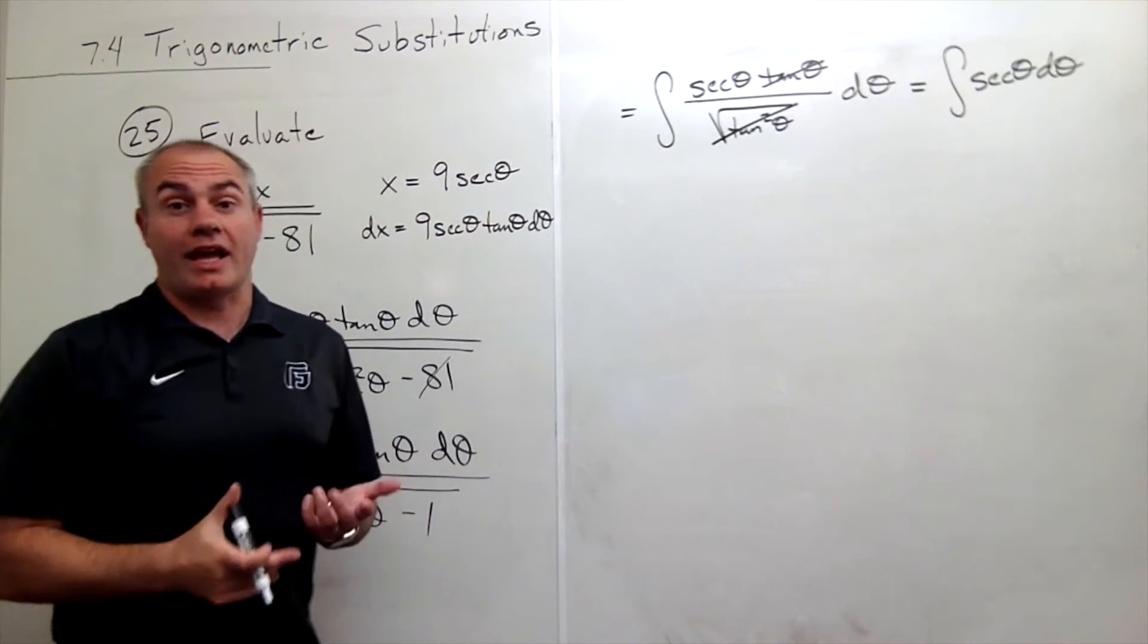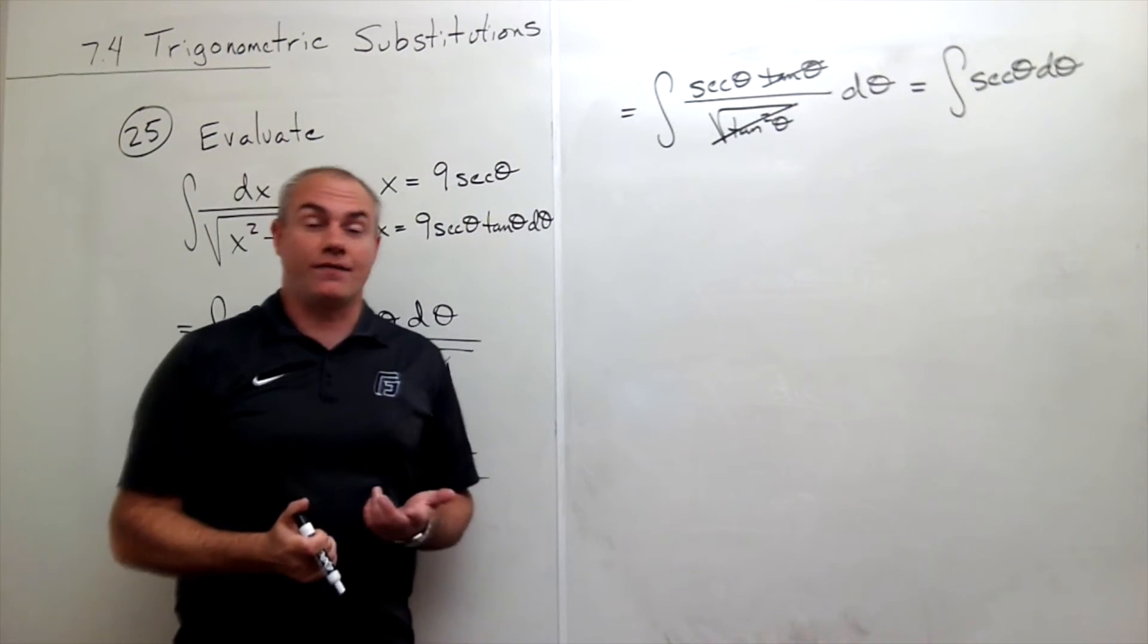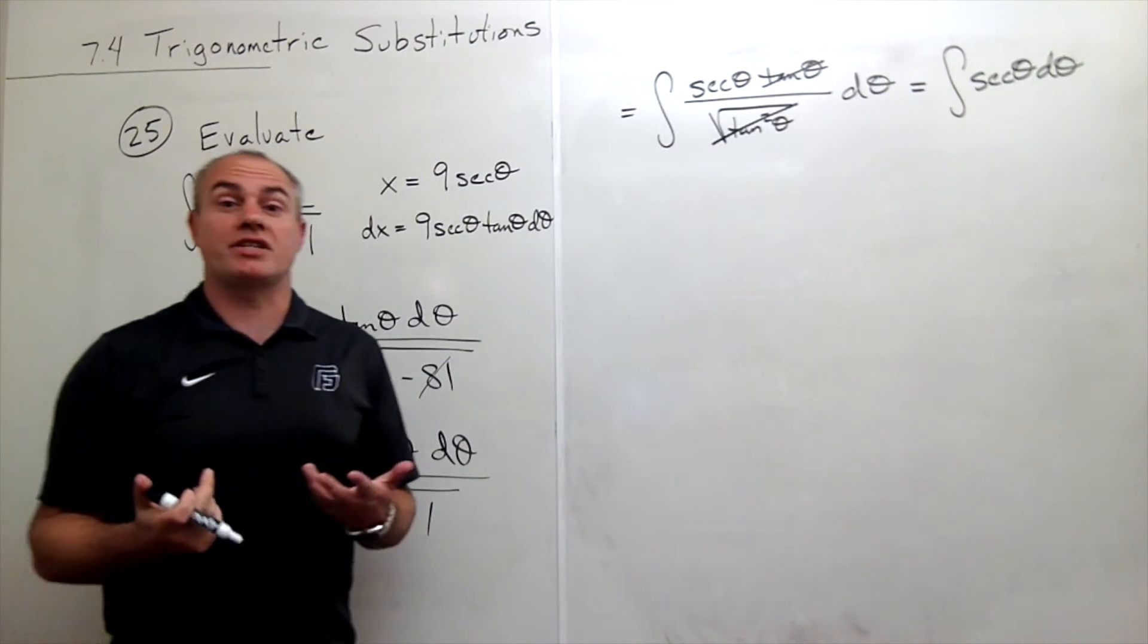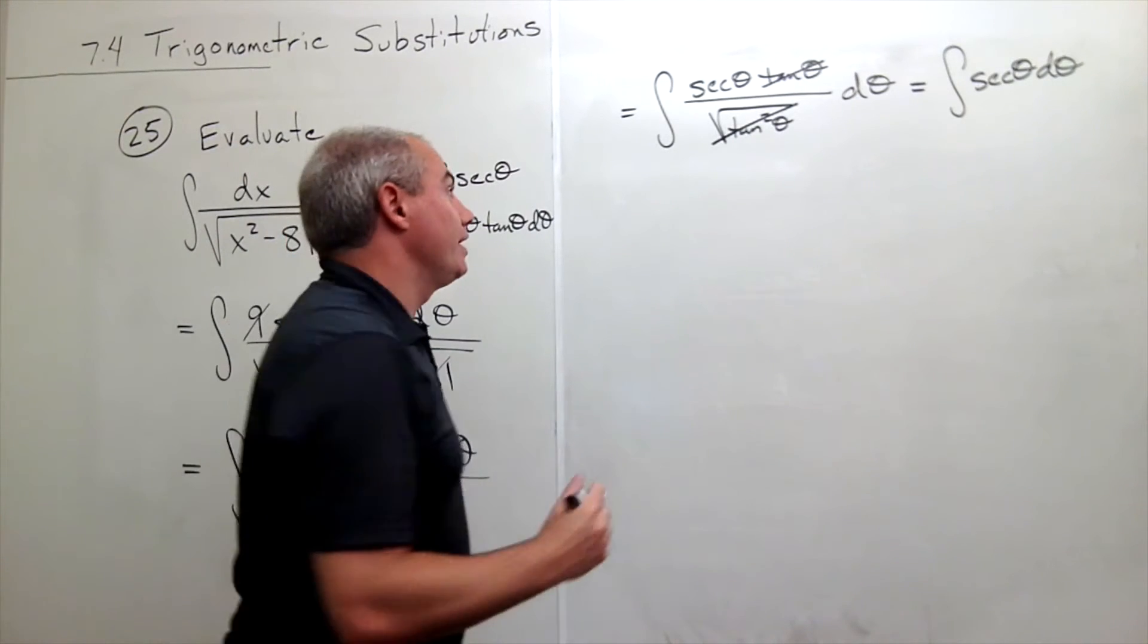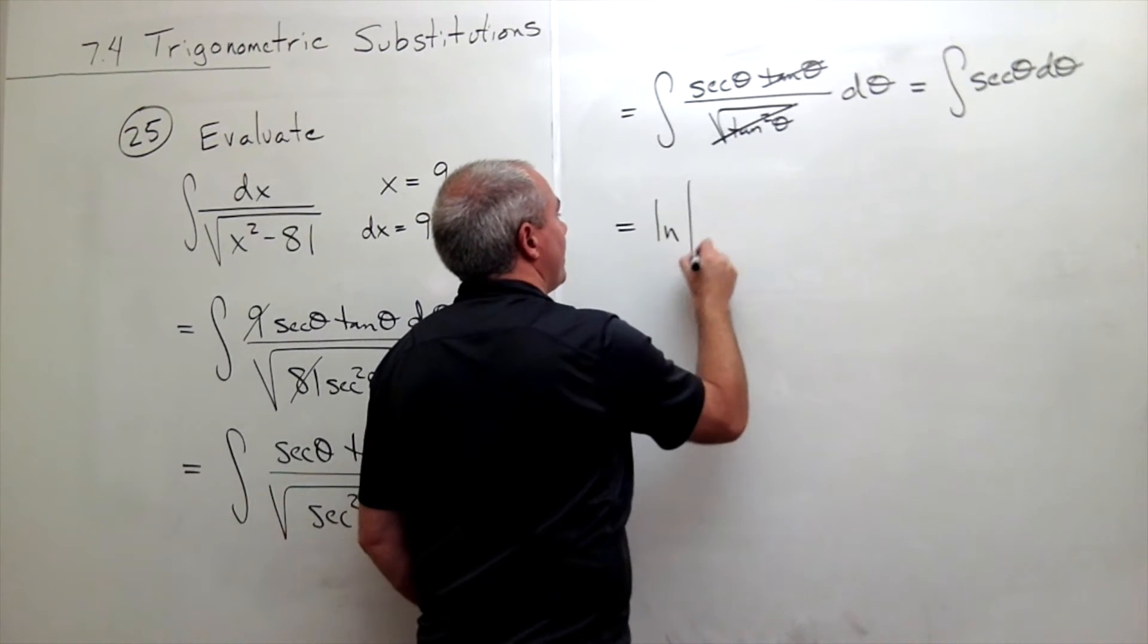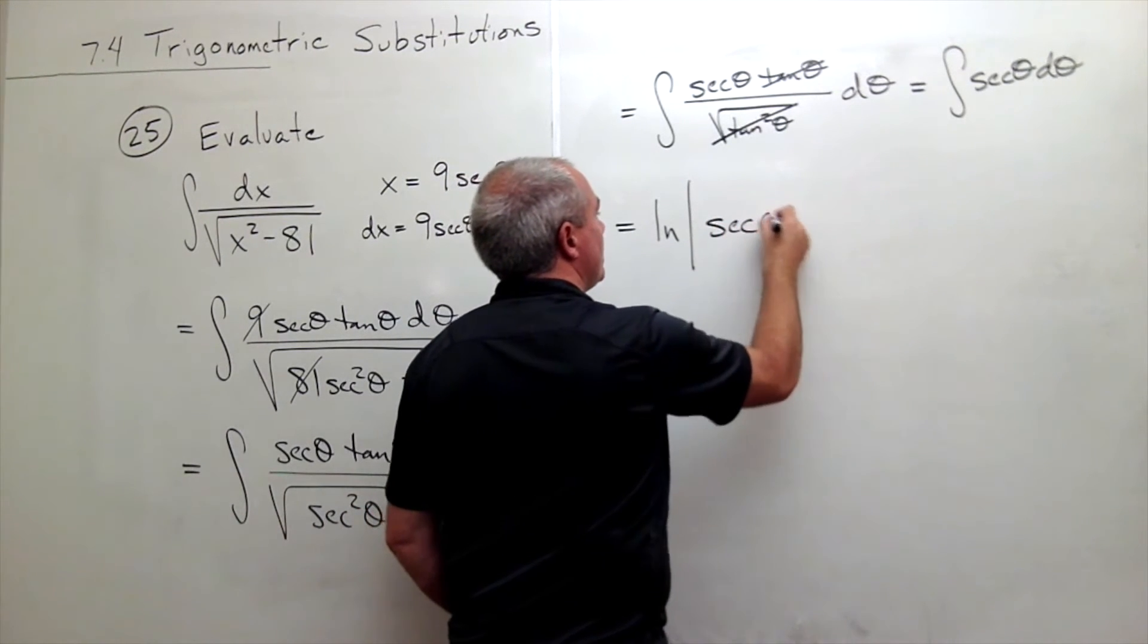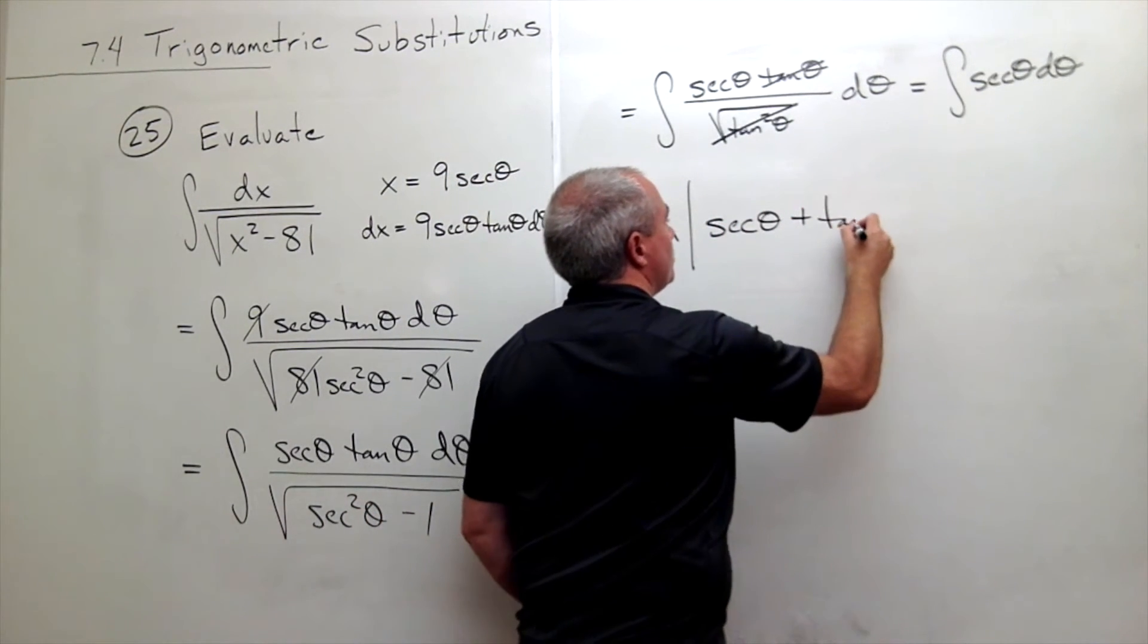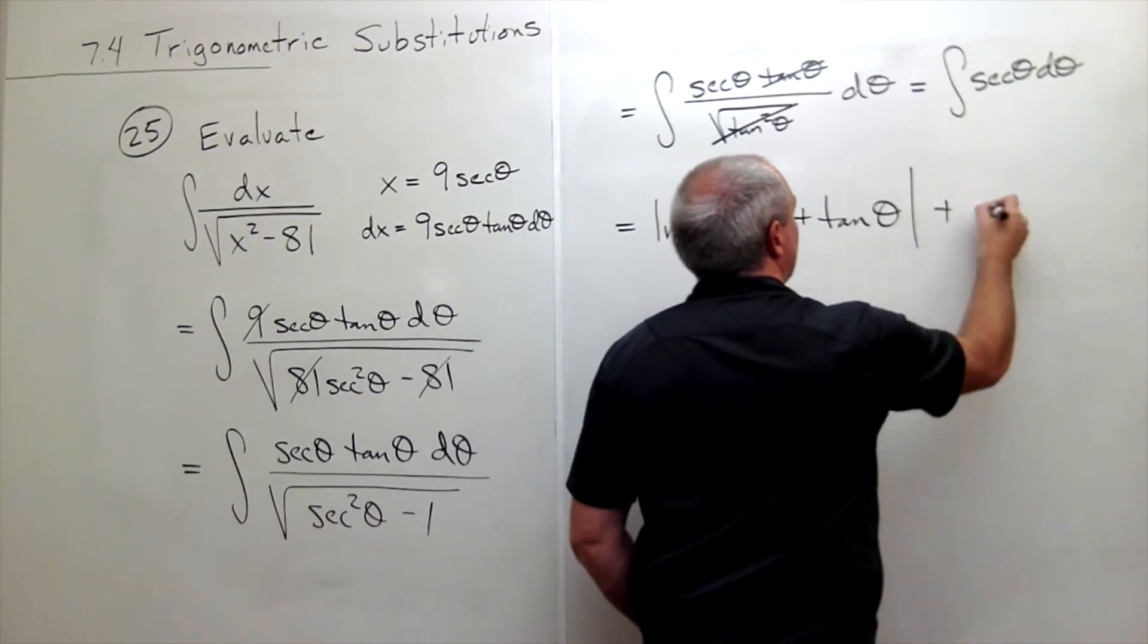The antiderivative of secant theta is helpful to know: it's the natural log of the absolute value of secant theta plus tangent theta, plus c.